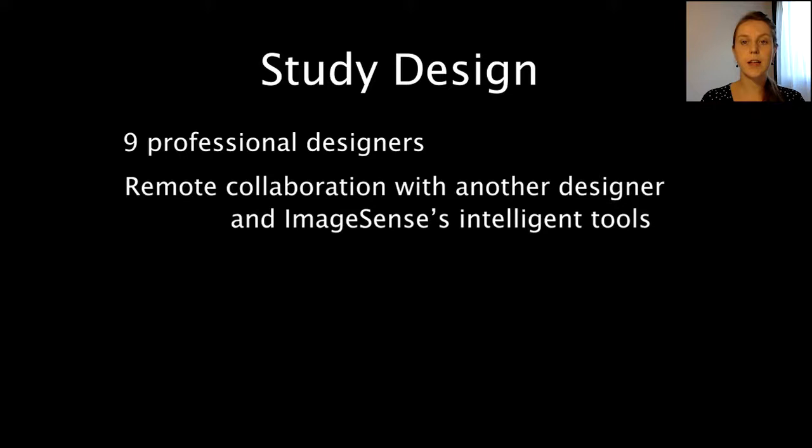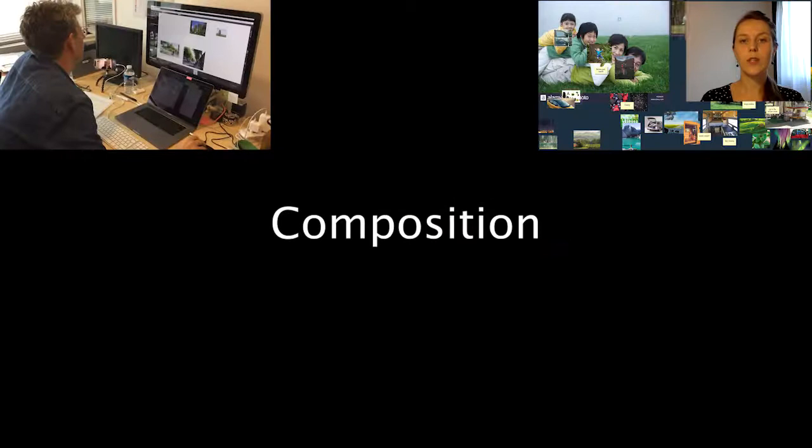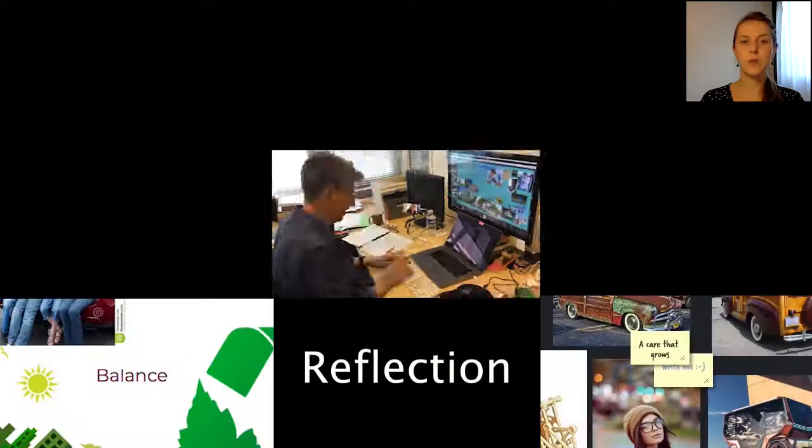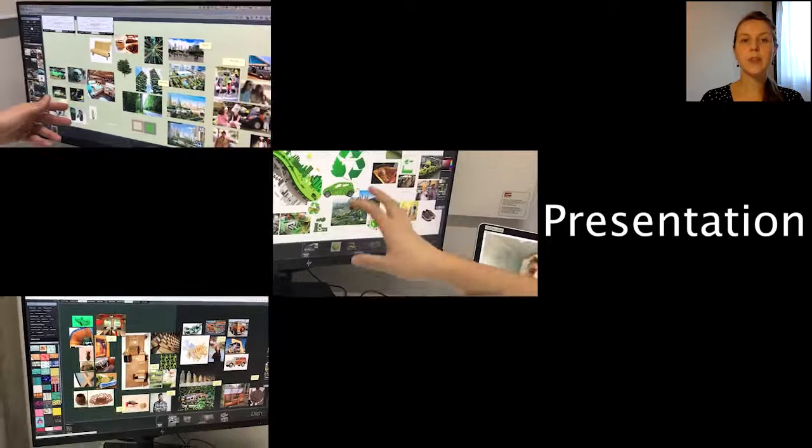We designed a study with nine professional designers, a collaborative designer, and ImageSense intelligent tools, using a fictional Echo Car as a design brief. Using ImageSense, the designers collected material together, iterated over the composition, and reflected and discussed ideas using a video conferencing tool and ImageSense. Additional text and labels helped to structure and communicate their ideas.